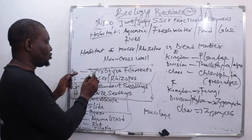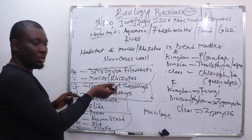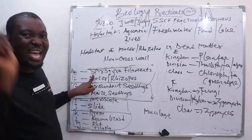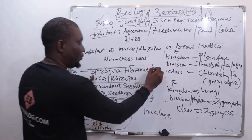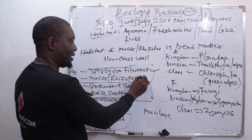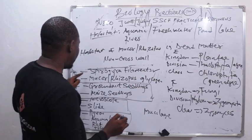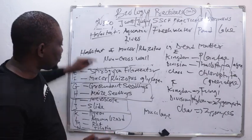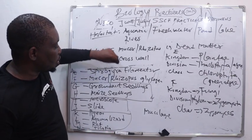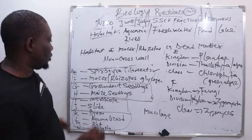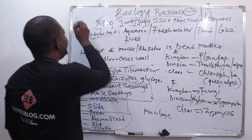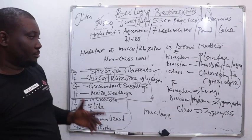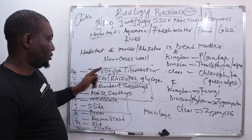If they ask how Specimen E stores food, Spirogyra stores food as starch. Specimen F stores food as glycogen. Also, the outer wall of Specimen E is made up of cellulose, while the outer wall of Specimen F is made up of chitin. Take notes — this is a basic but important distinction between these two.